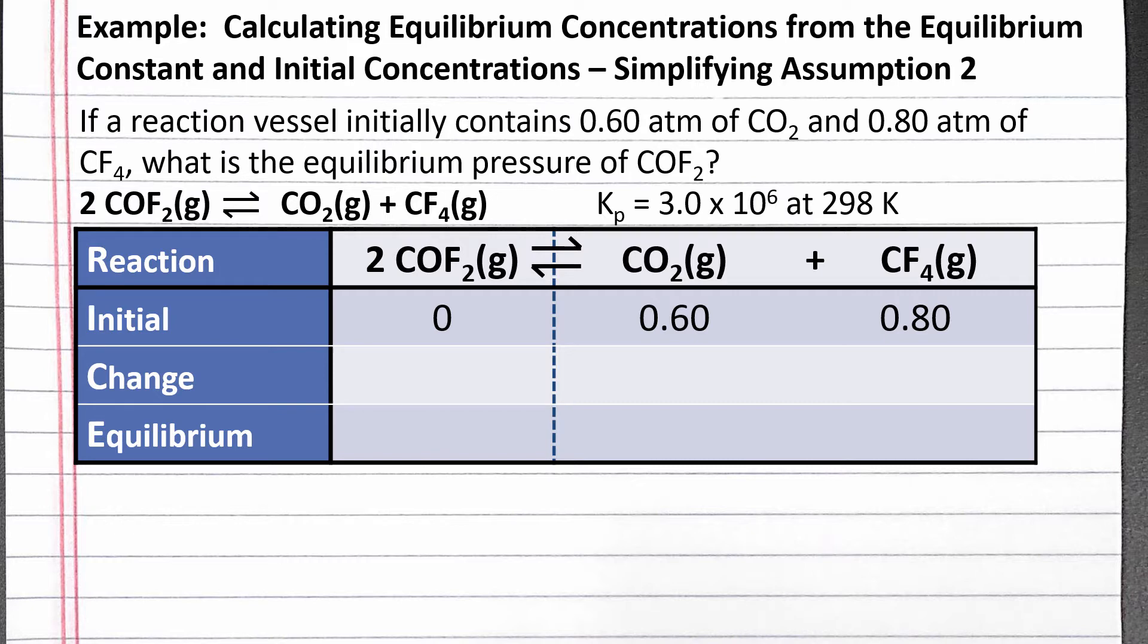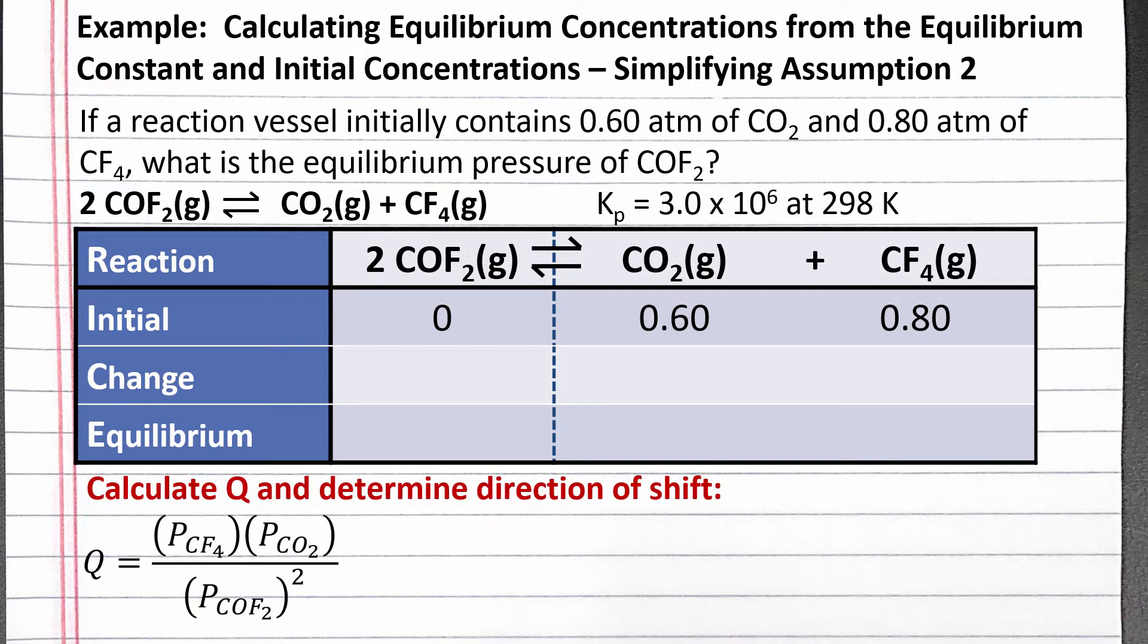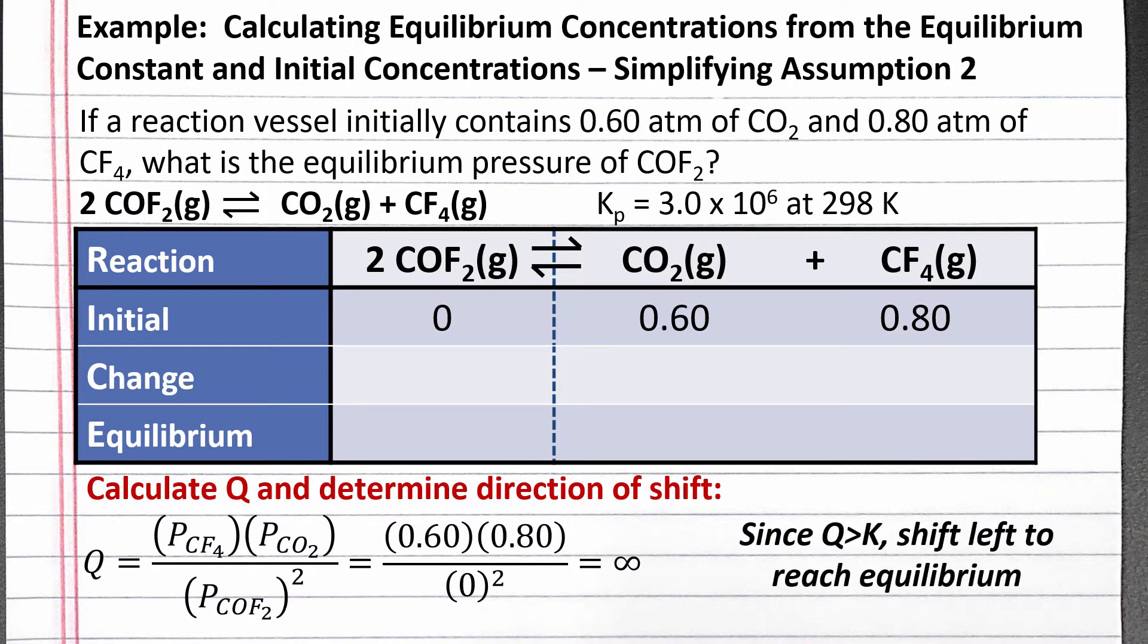To determine the change in pressure, we need to calculate the reaction quotient to determine which direction the reaction will shift to reach equilibrium. When calculating the reaction quotient Q, we use the Kp expression, but we substitute in the current pressures. Since we don't have any reactant to begin with, we have zero in the denominator, and our reaction quotient is infinity. The reaction quotient is larger than the equilibrium constant, so we need to shift left to reach equilibrium.